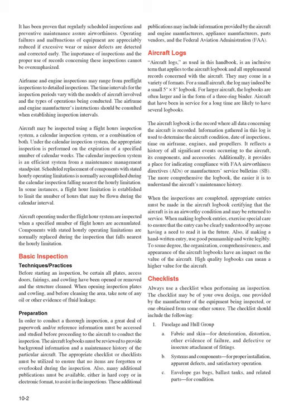Preparation: In order to conduct a thorough inspection, a great deal of paperwork and reference information must be accessed and studied before proceeding to the aircraft. The aircraft logbooks must be reviewed to provide background information and a maintenance history. The appropriate checklist must be utilized to ensure no items are forgotten. Additional publications must be available in hard copy or electronic format, including information from aircraft and engine manufacturers, appliance manufacturers, parts vendors, and the FAA.